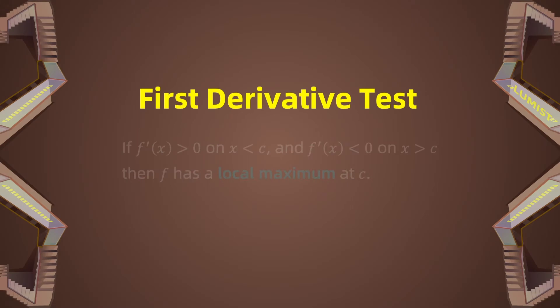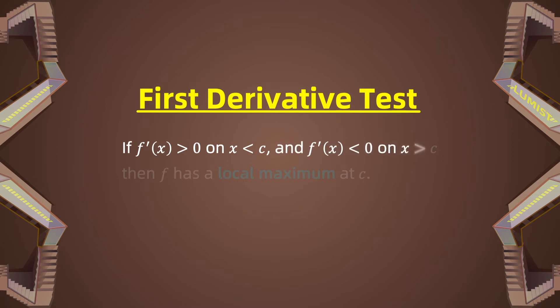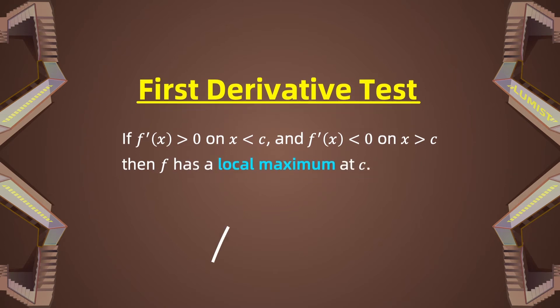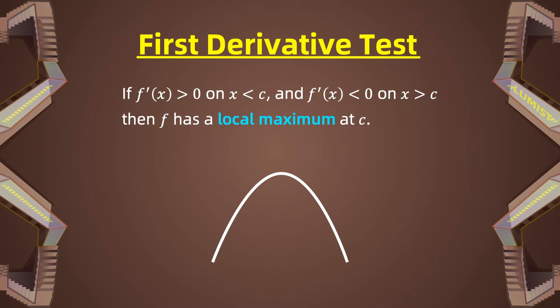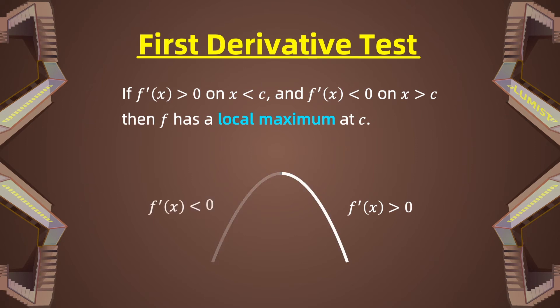The discussion of monotonicity can help us determine whether a function has a local maximum, local minimum, or a saddle point at a critical point. We call it the first derivative test. Suppose c is a critical number on a continuous function f. If f'(x) is greater than 0 for x less than c, and f'(x) is less than 0 for x greater than c, then f has a local maximum at c. As you may see on the graph, the derivative is positive before and negative after the maximum point where f'(x) equals 0.